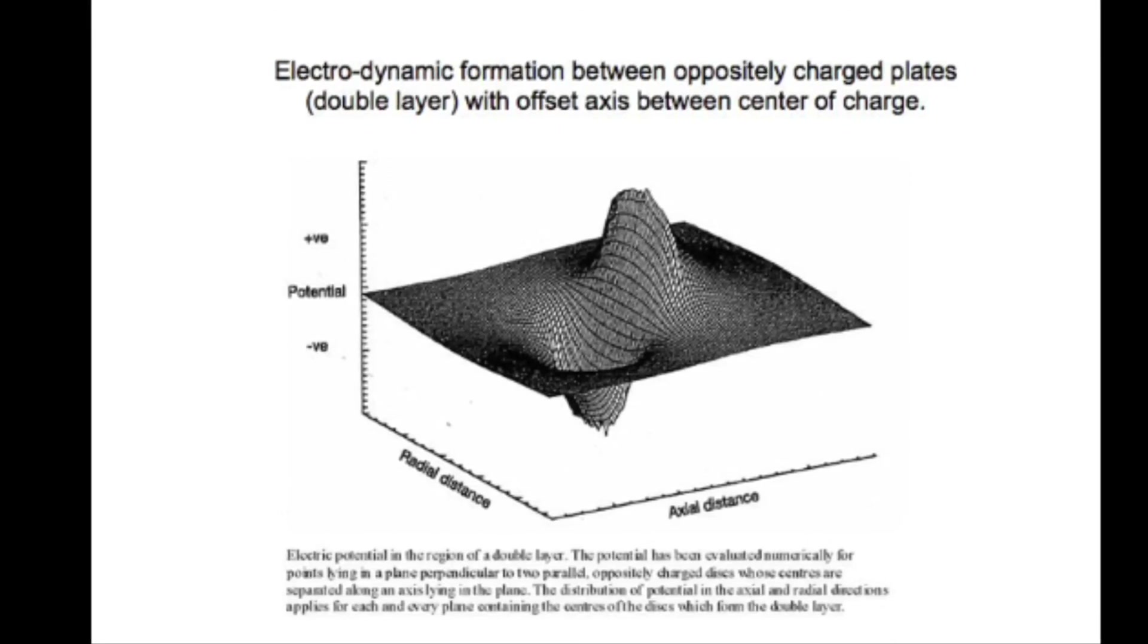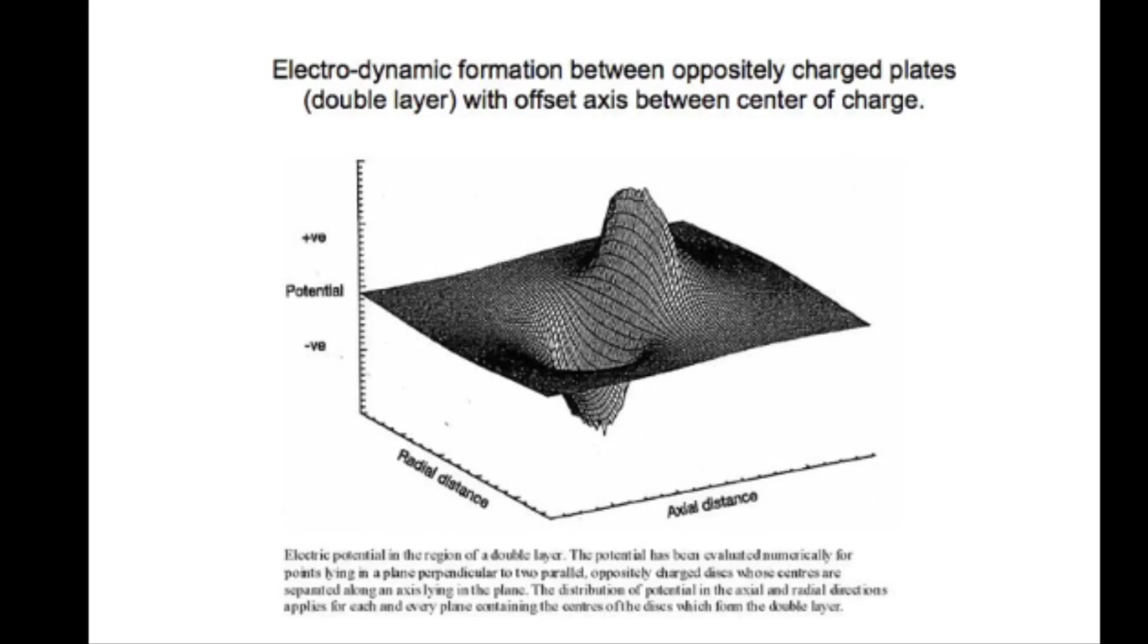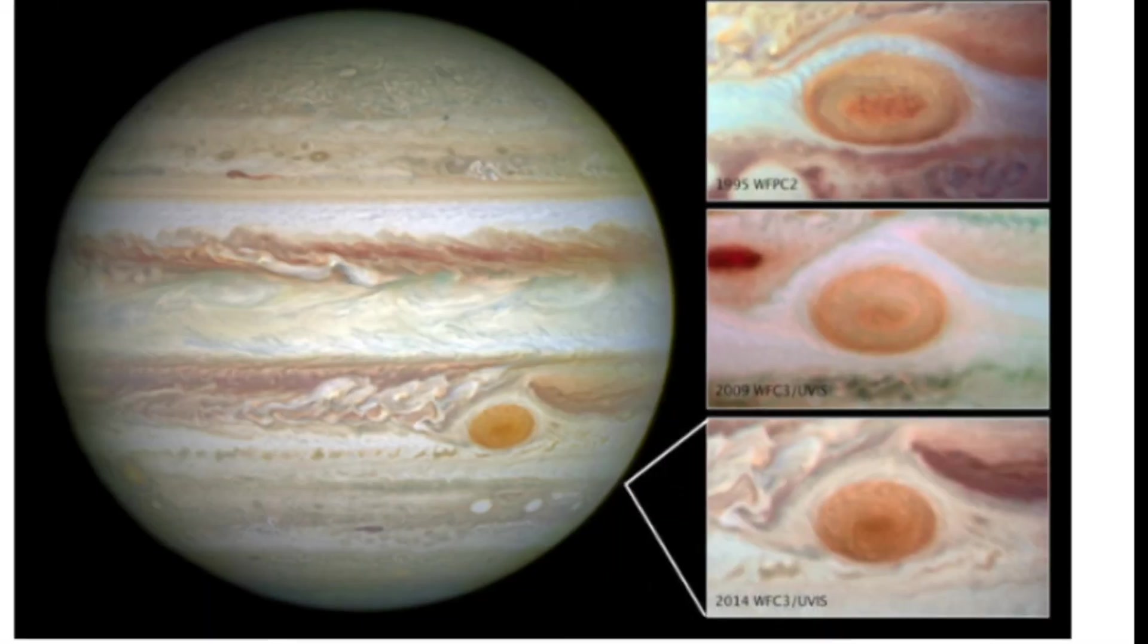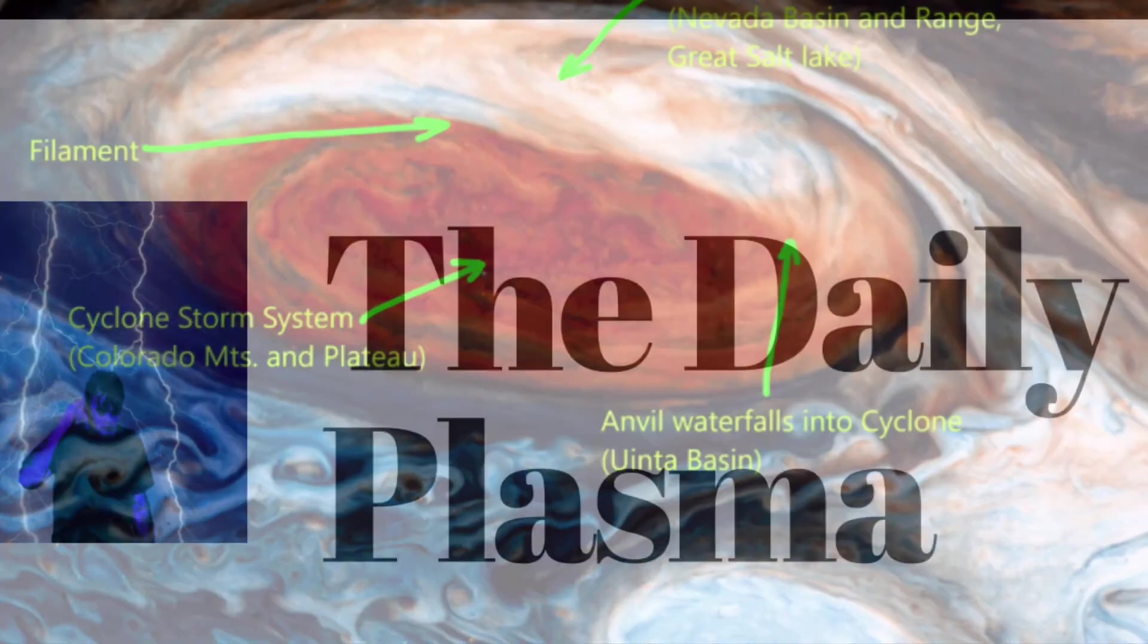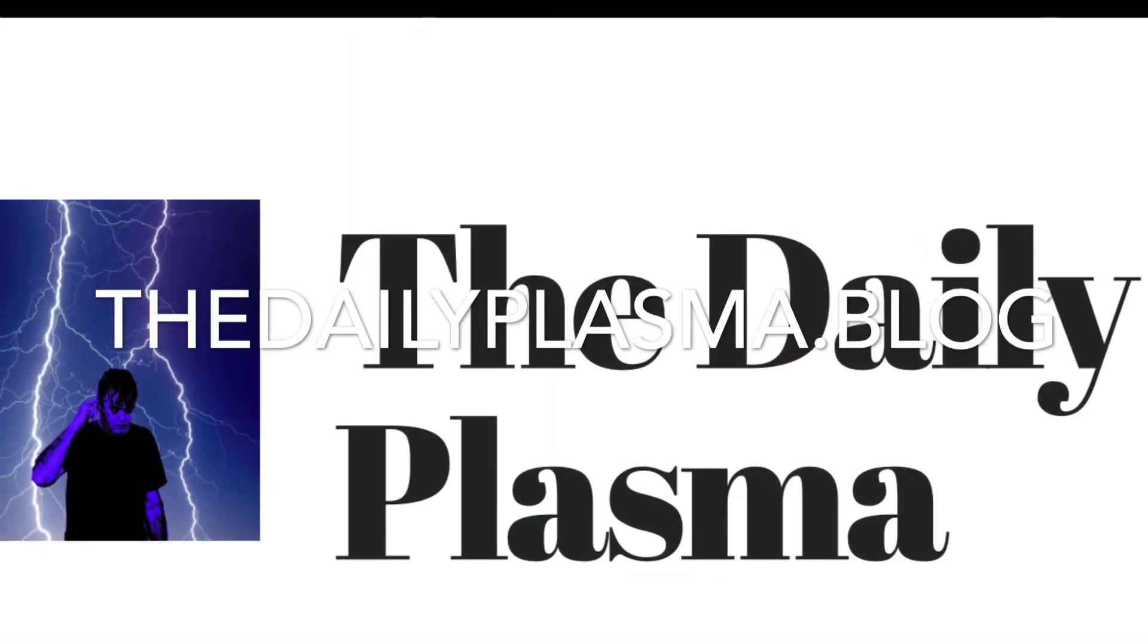In part three, we'll see how ring currents produce storms on Jupiter and Earth and how they progress in fractal elements from a common thunderstorm to the great red spot on Jupiter. For more information, go to the dailyplasma.blog.